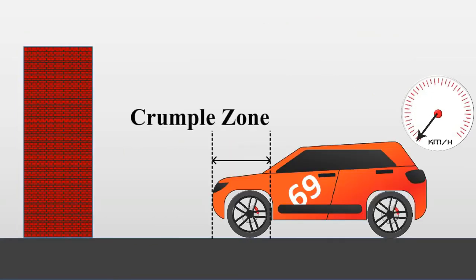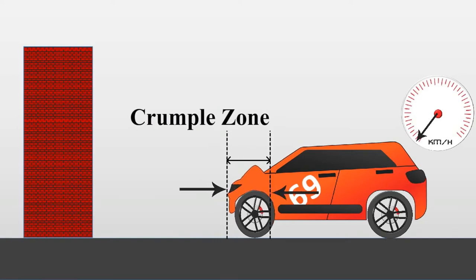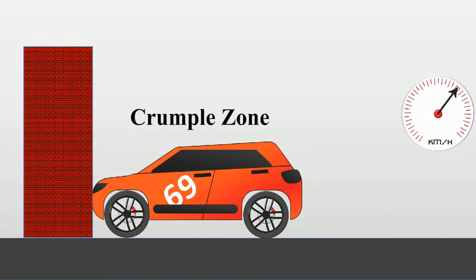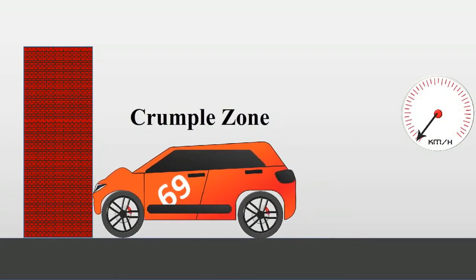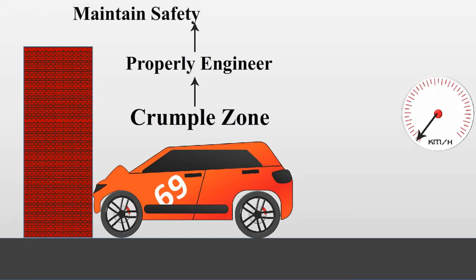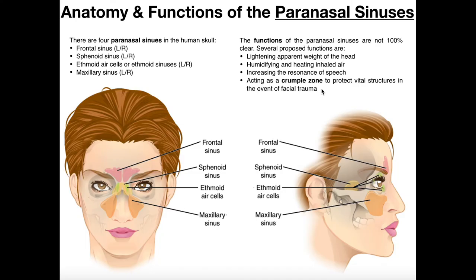What car manufacturers actually do is they intentionally make the front of the car a little bit weaker so that if it crashes into something, it'll give. As the car's crashing into the wall, that front is actually giving a little bit and compressing. This is a physics principle called impulse — what it does is it basically distributes the impact over a greater amount of time and decreases the force that's actually felt by the passengers and the driver, allowing them to be hit with less force and making it safer. That crumple zone is literally the zone of the car which is crumpling to diminish the force of the impact, absorbing that force.